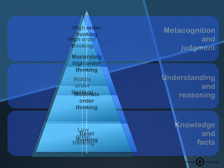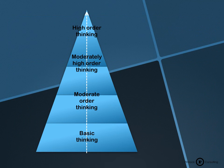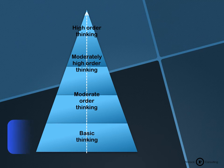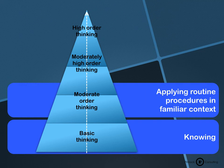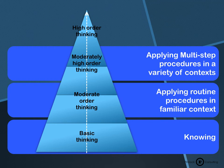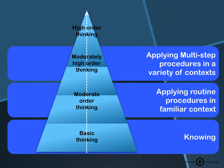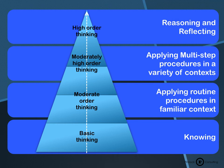Most subjects have their own way of interpreting these levels. Mathematics looks at it in four levels: knowing (lowest-order thinking), applying routine procedures in a familiar context, applying multi-step procedures in a variety of contexts, and reasoning and reflecting (highest-order thinking).